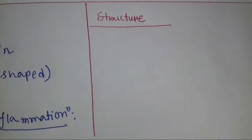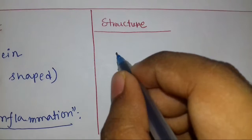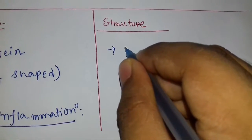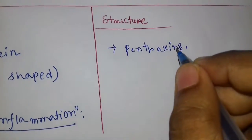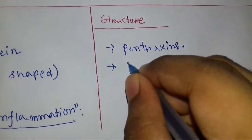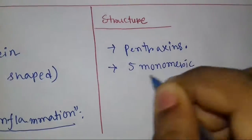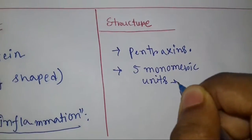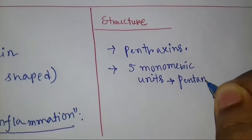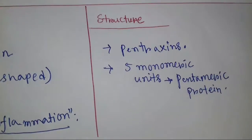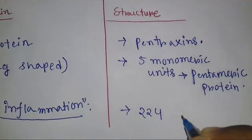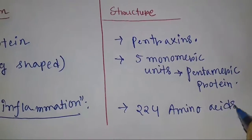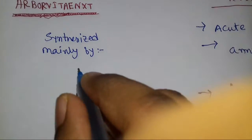Now let us know about the structure of this protein. Basically it belongs to a family of proteins known as the small pentraxin family, and it has five monomeric units in its structure — thus it is a pentraxin protein. It has 224 amino acids in one molecule.